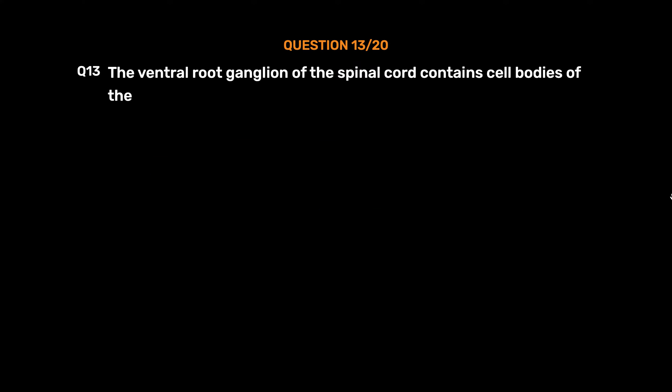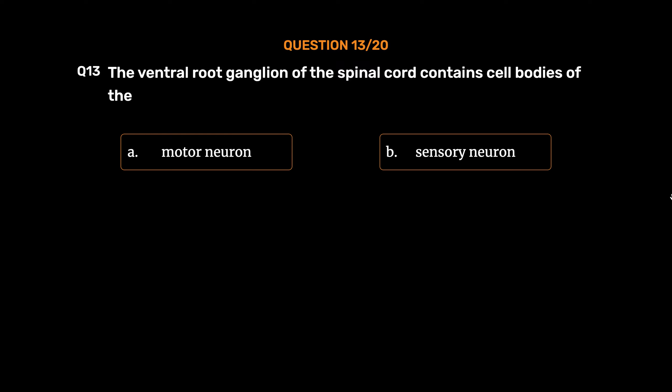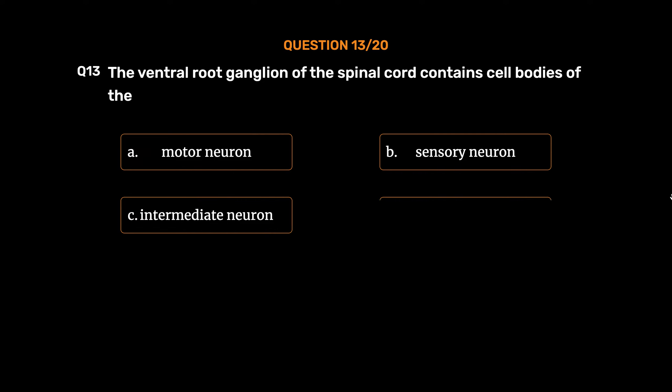Question number 13. The ventral root ganglion of the spinal cord contains cell bodies of the: Option A: Motor neuron. Option B: Sensory neuron. Option C: Intermediate neuron. Option D: Association neuron. The correct answer is Option A: Motor neuron.